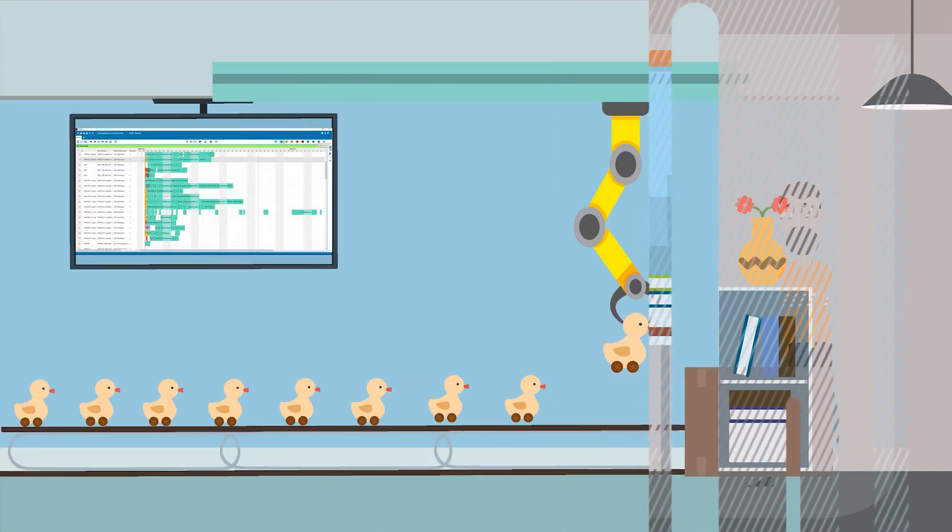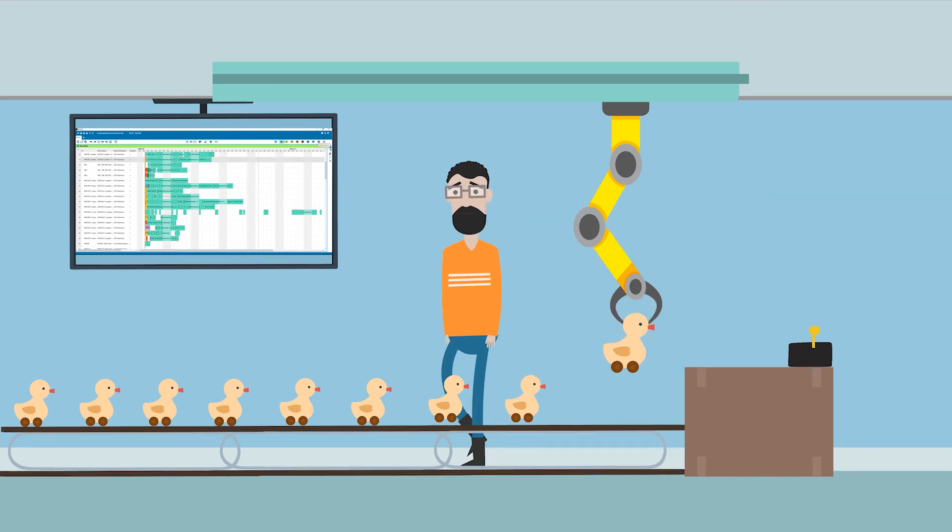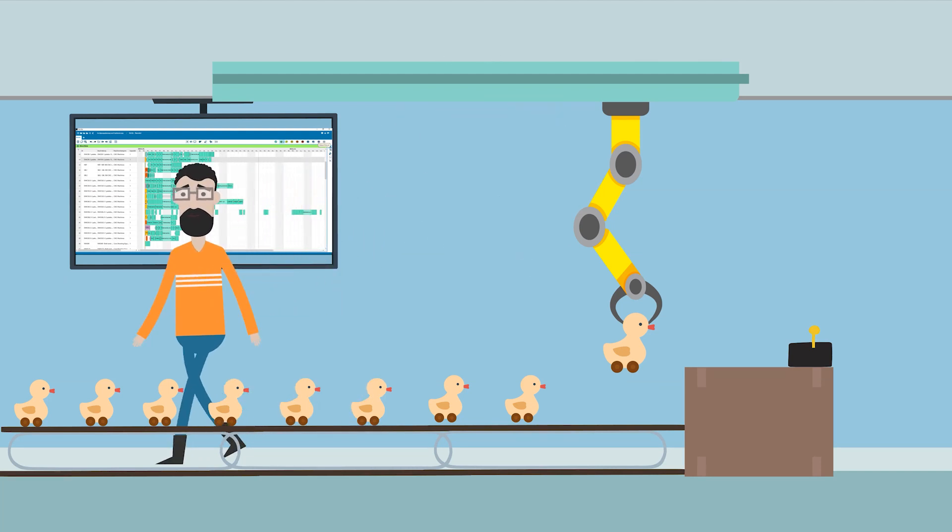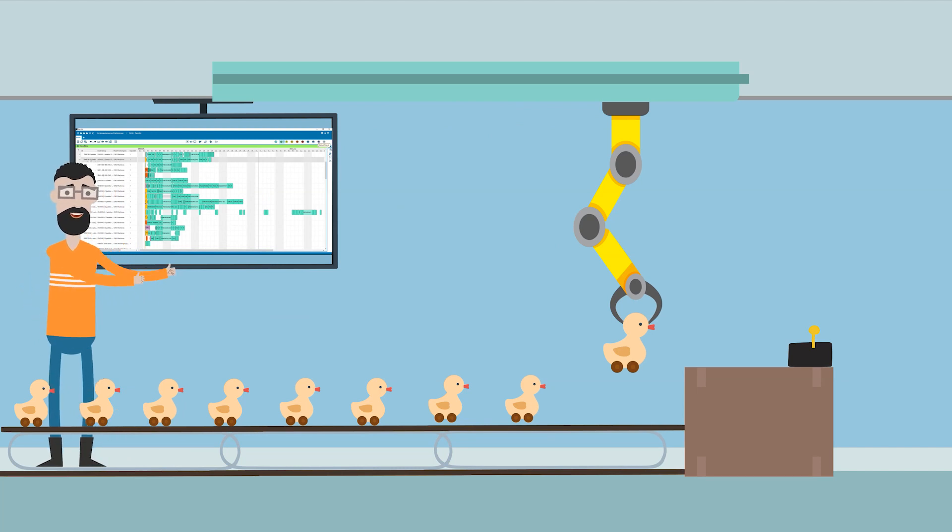With an APS system, it is not only possible to realize production planning and control in manufacturing, but the entire supply chain can also be managed and monitored. APS stands for Advanced Planning and Scheduling. Resource-oriented rough and detailed planning can be optimally realized with an APS solution. This provides more transparency and automation in production planning.